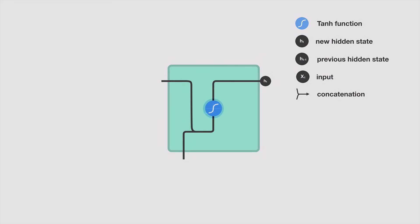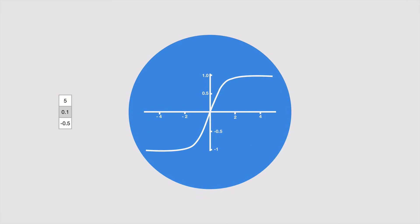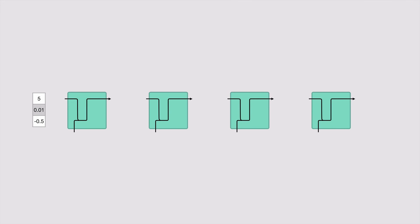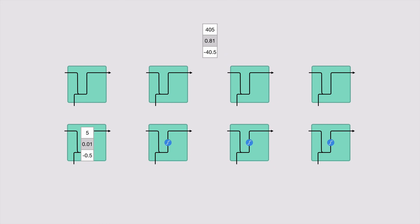The tanh activation is used to help regulate the values flowing through the network. The tanh function squishes values to always be between negative one and one. When vectors are flowing through a neural network, it undergoes many transformations due to various math operations. Imagine a value that continues to be multiplied by, let's say, three. You can see how some values can explode and become astronomical, causing other values to seem insignificant. A tanh function ensures that the values stay between negative one and one, thus regulating the neural network's output.